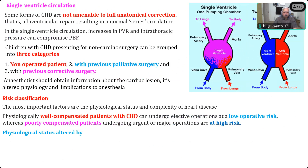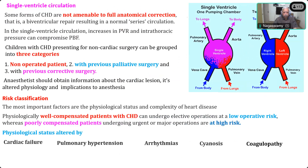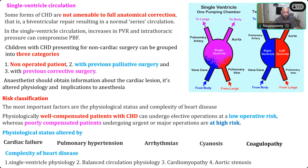Physiological status can be altered if the patient is already in cardiac failure, has severe pulmonary hypertension, arrhythmias, cyanosis, or coagulopathy. Complex heart diseases include single ventricle physiology, balanced circulation physiology, cardiomyopathy, and rarely congenital aortic stenosis. These are considered very complex heart diseases and all high-risk cases.